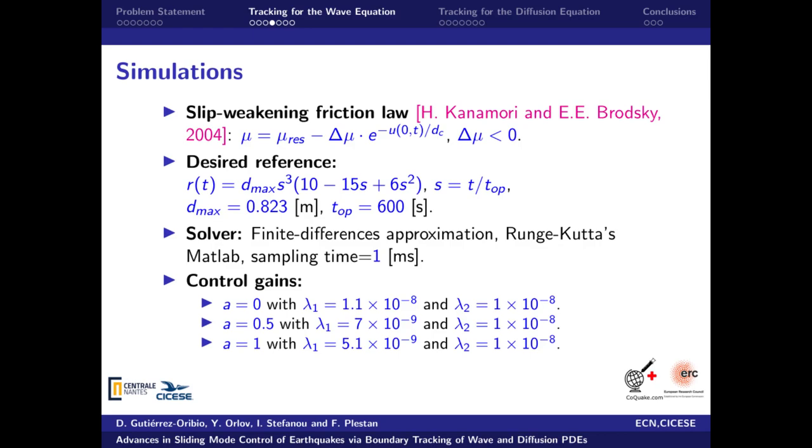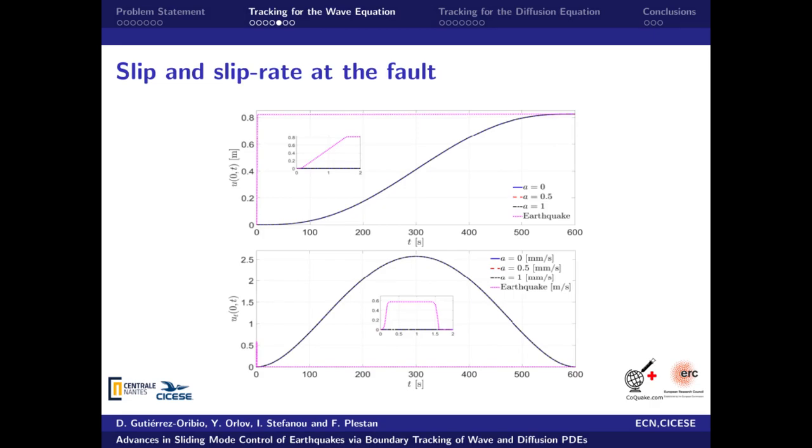We will present now the simulations made over the considered fault model and the design control. The friction coefficient was selected as the slip weakening friction law. Such reference starts from zero displacement and reaches a maximum displacement d max at a time t up. Notice that t up can be conveniently chosen to reduce the ultimate bound as discussed before. The wave equation was implemented in MATLAB using the finite differences approximation and a sampling time equal to 1 ms. Three different values of A were chosen to test the homogeneous controller. The gain lambda 2 was the same for the three cases and lambda 1 was designed according to the presented theorem. These two plots show the performed tracking at x equal to zero, where the fault is located. The three cases are able to reach the same displacement as the earthquake-like behavior, but three orders of magnitude slower, dissipating the stored energy in a controlled manner.